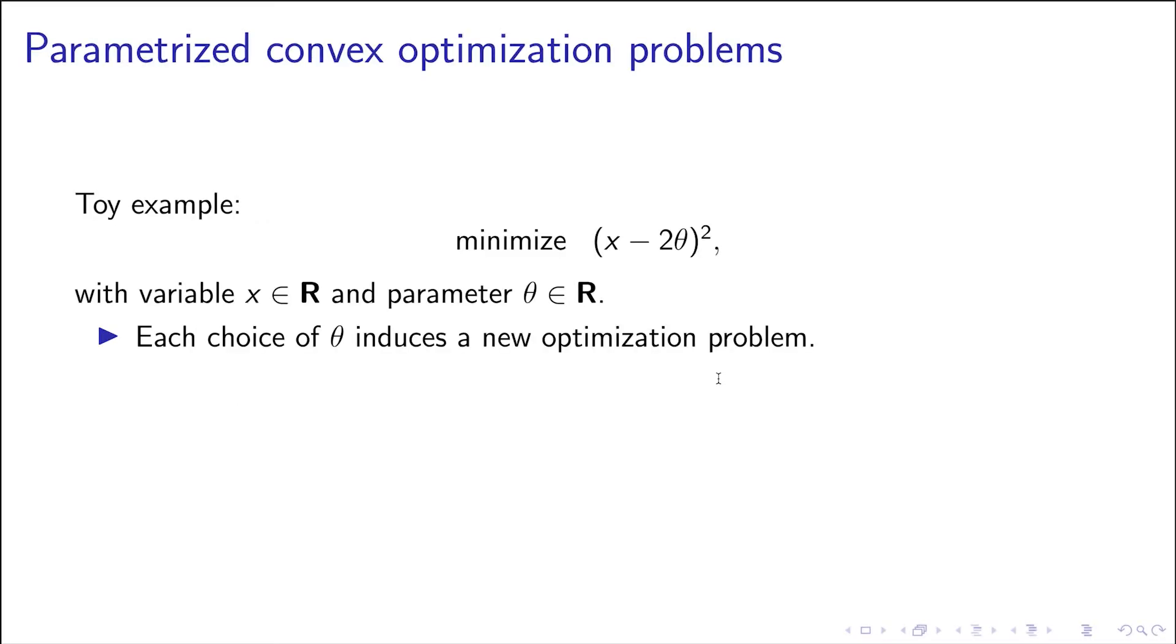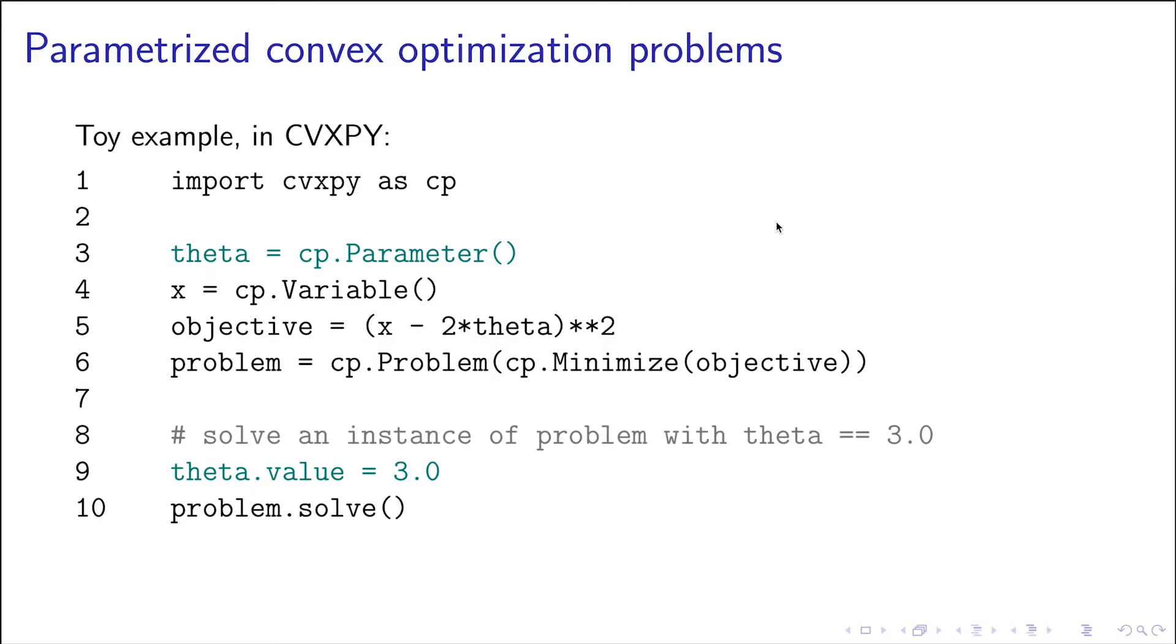Okay, so here's a very simple example—and you'll see many more complex examples later—but this is just to get the idea across. So here we have a baby problem, a parametrized problem with one parameter theta, and every choice of theta creates a new optimization problem.